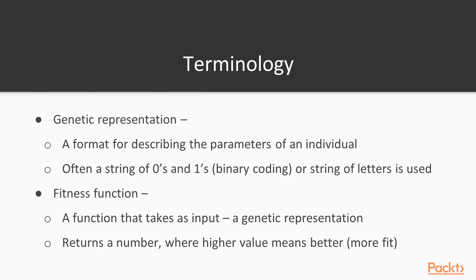Now we'll introduce genetic algorithm terminology. First, we have the genetic representation — the format you'll use for describing the parameters of an individual or solution. It's often a string of zeros and ones, binary coding, or perhaps letters. In the case of the antenna, it might have been a line drawing. Next, we have the fitness function. This function takes as input the genetic representation of a particular individual and determines its score, which might be a number.